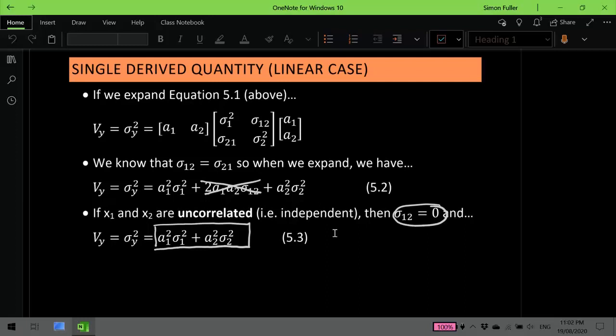So this is the shortcut formula, if you like, for uncorrelated measurements to determine the variance of the derived quantity y. And, of course, you can then take this and work out the standard deviation of y by taking the square root of the variance value.